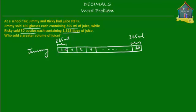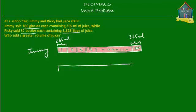Now let's add some color — Jimmy's juice is pink, maybe pink guava. While Jimmy was selling juice in glasses, Ricky was selling juice in bottles. What Ricky sold was 30 bottles of juice containing 1.325 liters of juice each. I'm assuming for now that Jimmy sold more, so I'm making Ricky's block slightly smaller. It doesn't really matter which one you make bigger or smaller because this is just representative, not actual.